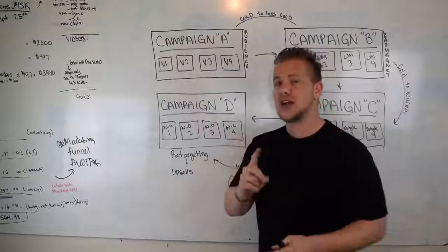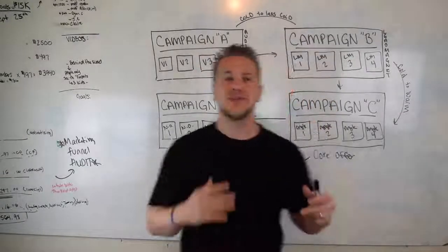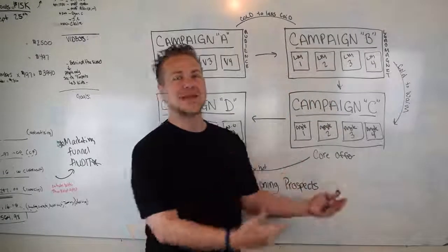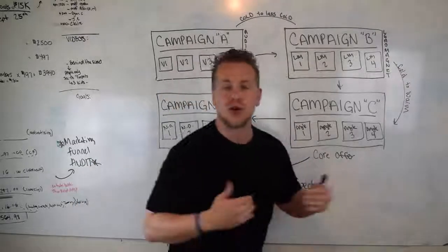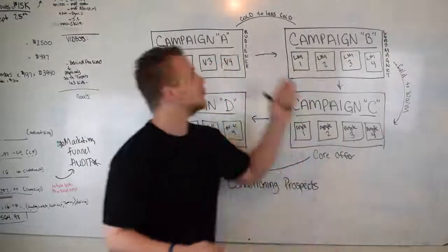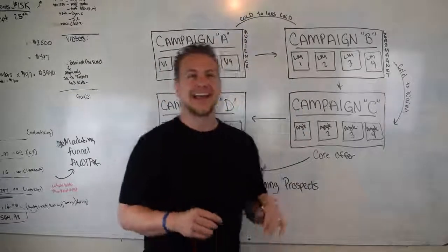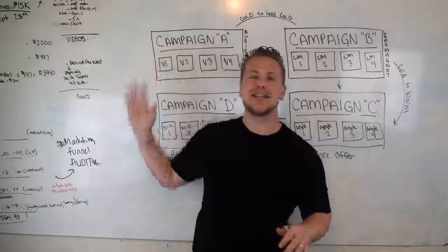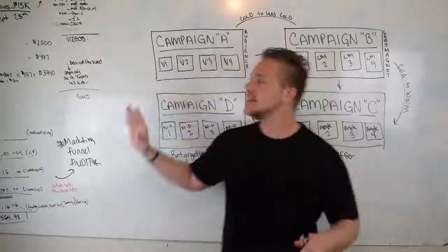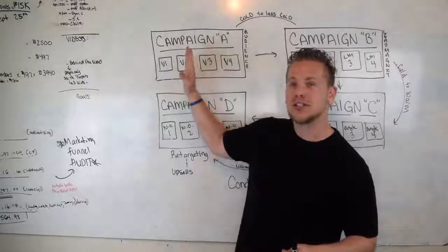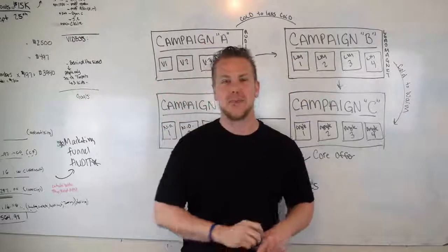Once you have that going, we're going to transition to Campaign B. Moving from Campaign A to Campaign B is not like going from cold to warm or hot traffic — we're going from cold to a little bit less cold, meaning these people haven't done anything with us yet. They watched a couple of our videos, but that's about it. You're going to set up a sequence to make sure only the right people are seeing each campaign's videos.